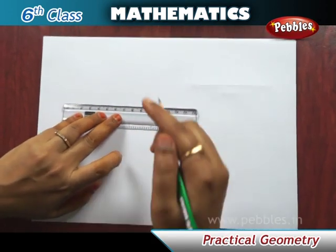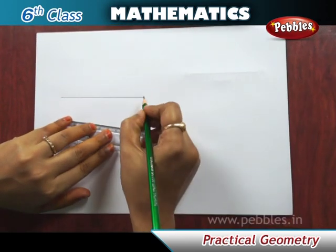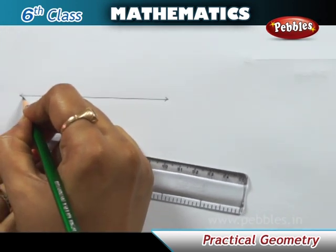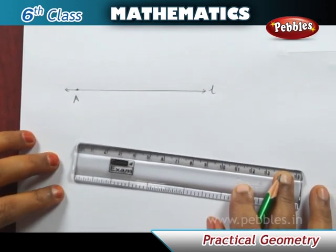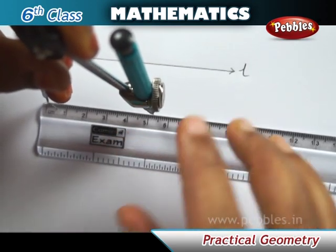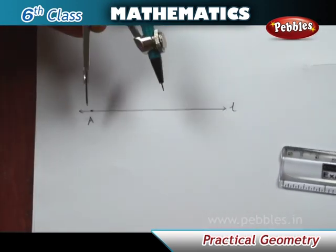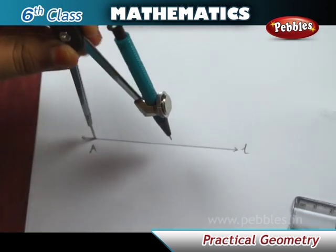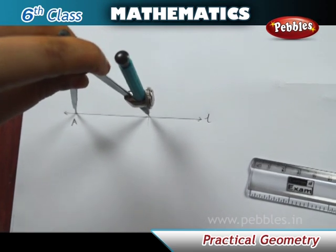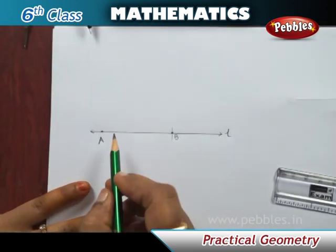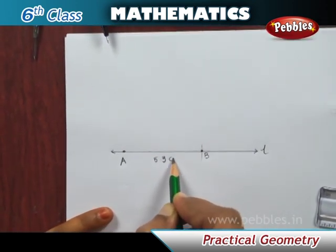First, place the metal pointer of the compasses on the zero mark of the ruler. Open the compasses so that the pencil point touches the 5.3 centimeter mark on the ruler. Then place the pointer at point A on line L and draw an arc to cut the line. Mark the point where the arc cuts the line as B. On line L, we now have line segment AB of the required length.